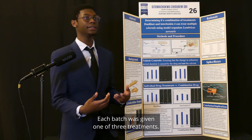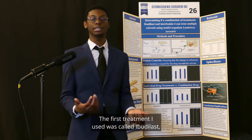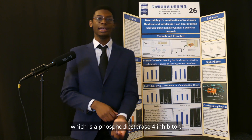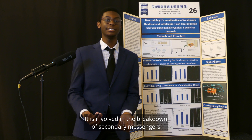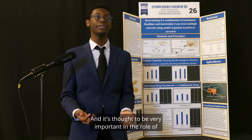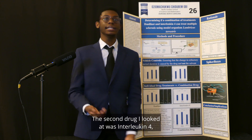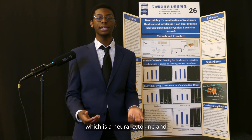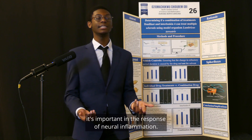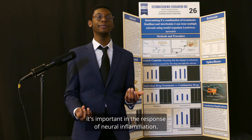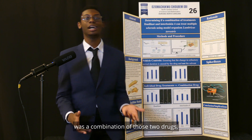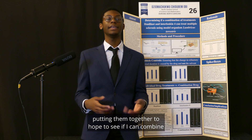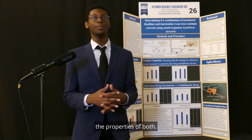Each batch was given one of three treatments. The first treatment was Ibutylast, a phosphodiesterase 4 inhibitor involved in the breakdown of secondary messengers in the cell cycle, and it's thought to be very important in neural regeneration. The second drug was interleukin-4, a neural cytokine important in the response to neural inflammation. The third treatment was a combination of both interleukin-4 and Ibutylast, combining the properties of both drugs.